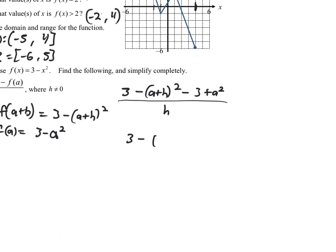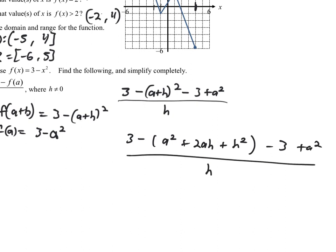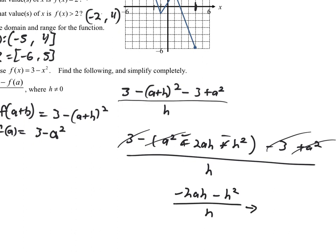Expanding (a+h) squared gives a squared + 2ah + h squared, so the numerator becomes: negative 3 minus a squared minus 2ah minus h squared minus 3 plus a squared, all over h. The 3's cancel and the a squared terms cancel, leaving (negative 2ah minus h squared) / h. Canceling h gives the final answer: negative 2a minus h.